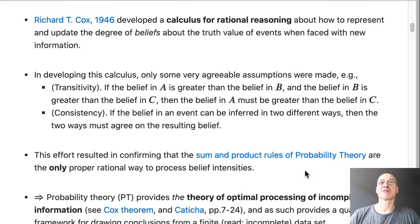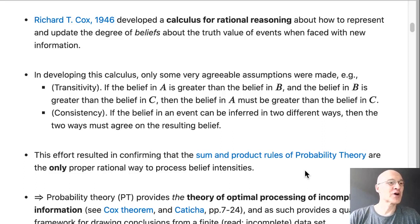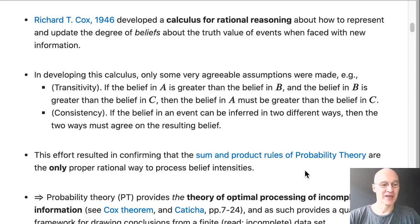Once we establish that the interpretation of a probability for a particular event is my belief in the truth of that event, the question becomes: how do I update that belief if I get more information? How do I update my belief about rain tomorrow if I see clouds appearing, or if I know it's raining in Germany and there's a wind coming from the east? How do I update my belief in the face of new information? We need a calculus for that.